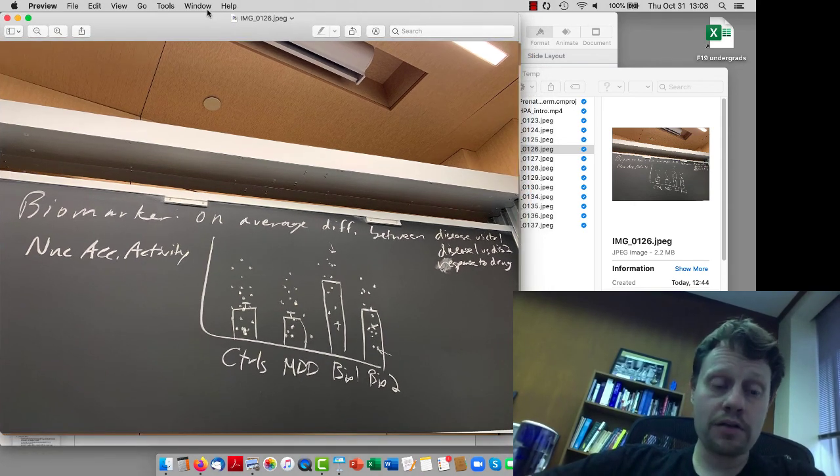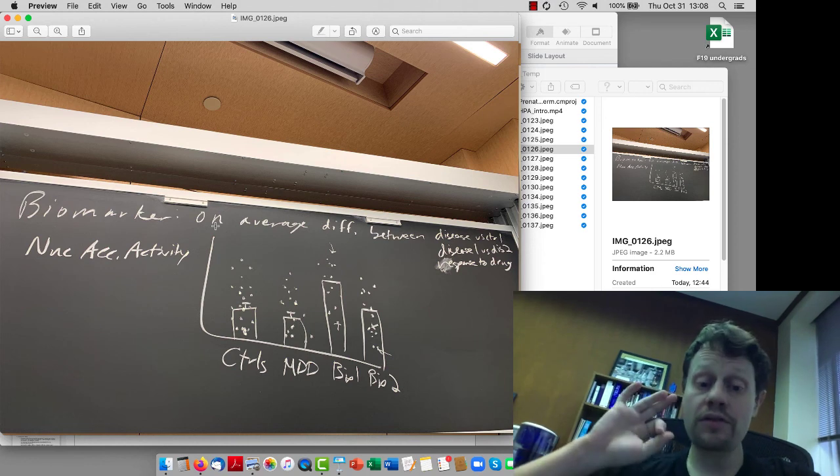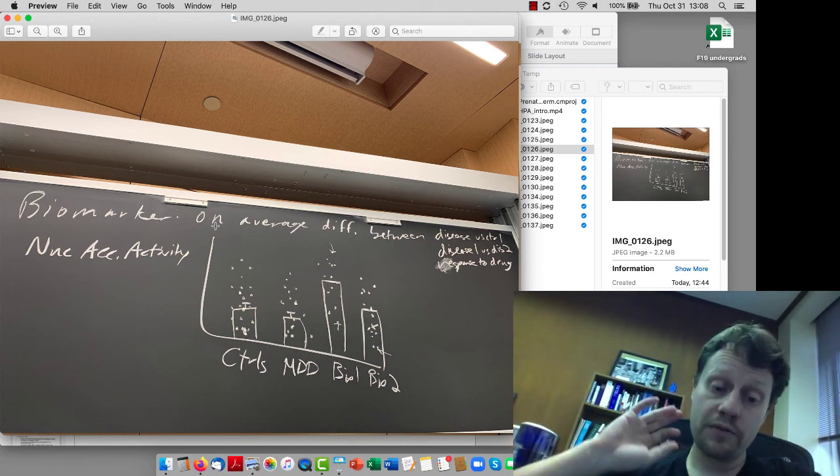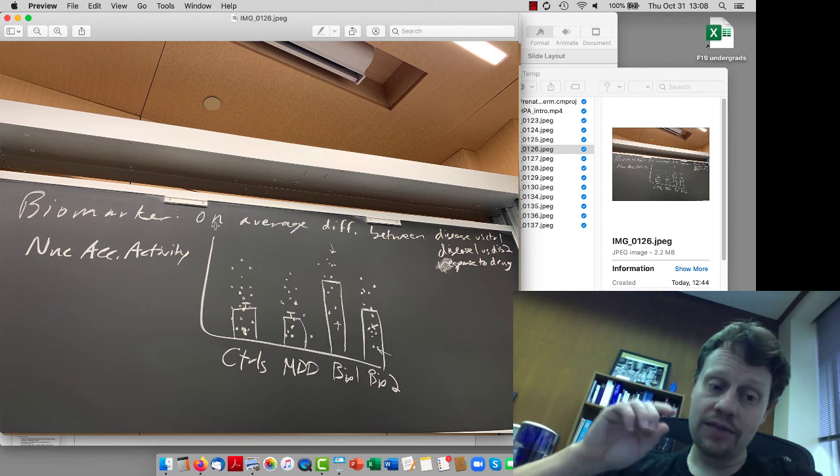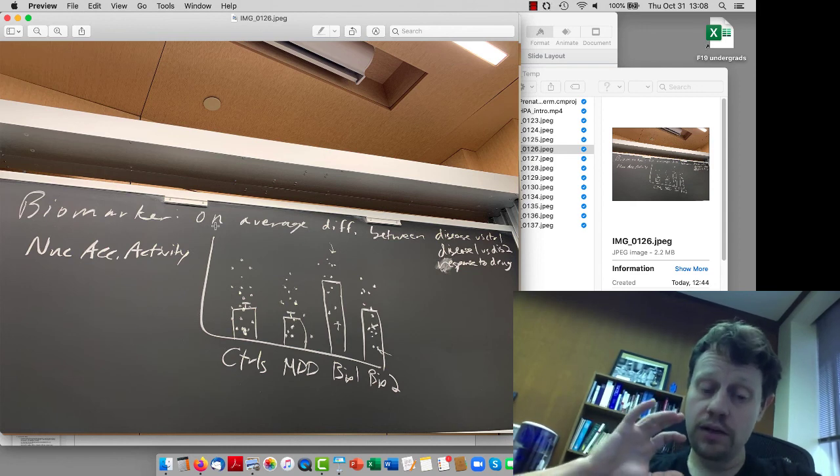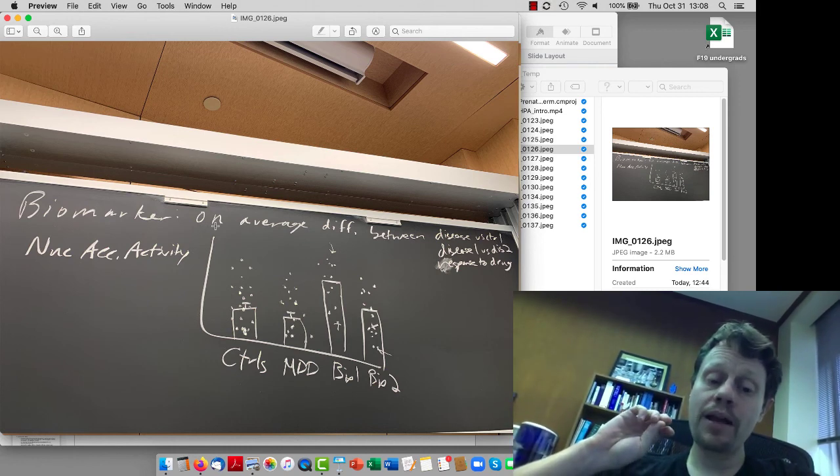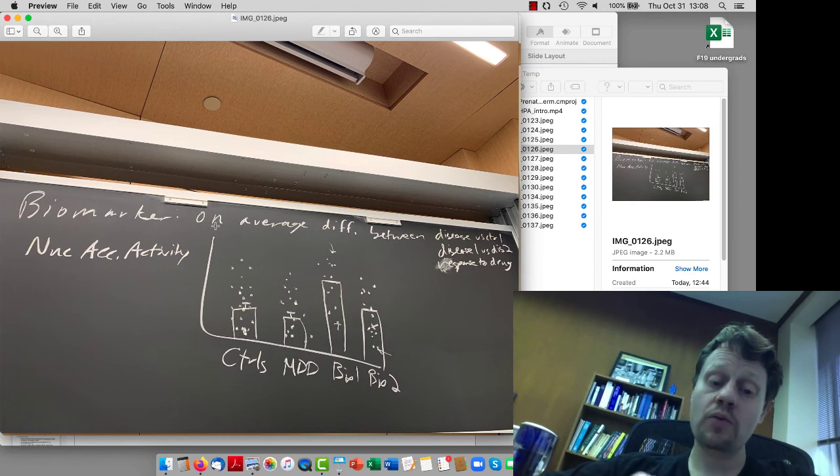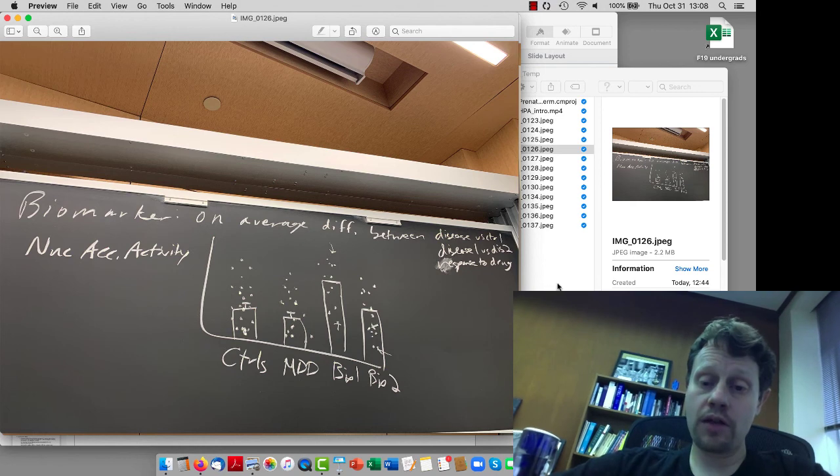Before we get to that, there were a few questions about biomarkers. One was just about what is a biomarker. Biomarkers are differences on average, either differences on average between disease and control or differences on average between people with a disease who respond to a drug versus people who don't. When you look at one biomarker at a time, what you see is that on average there are differences between disease and healthy or between people who respond to a drug versus people who don't. But one individual biomarker doesn't give you a guarantee about whether somebody has a disease or whether somebody's going to respond to a drug. This is why some of these multi-brain approaches that Maya talked about are really important.